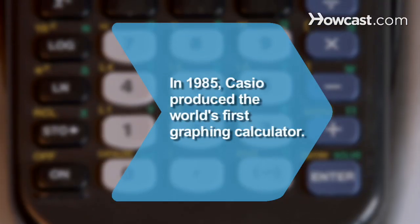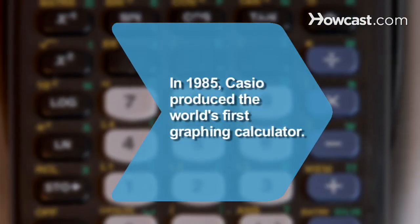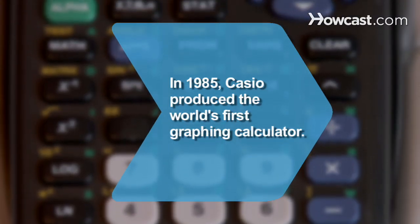Did you know? Casio produced the world's first graphing calculator, the FX-7000G, in 1985.